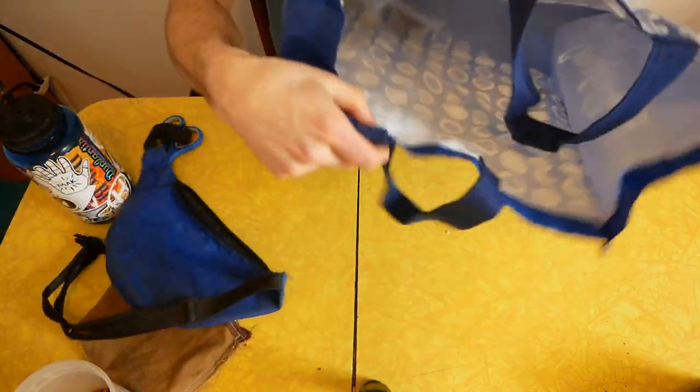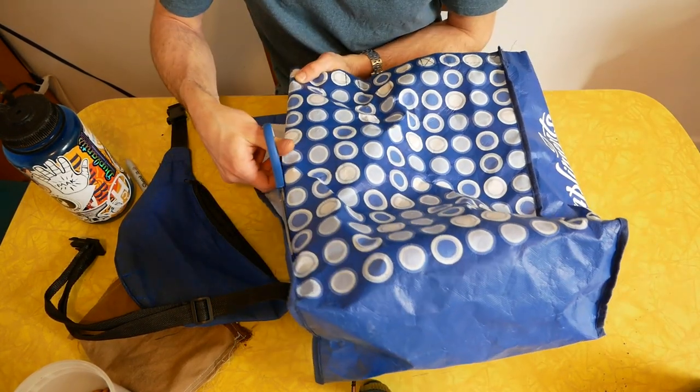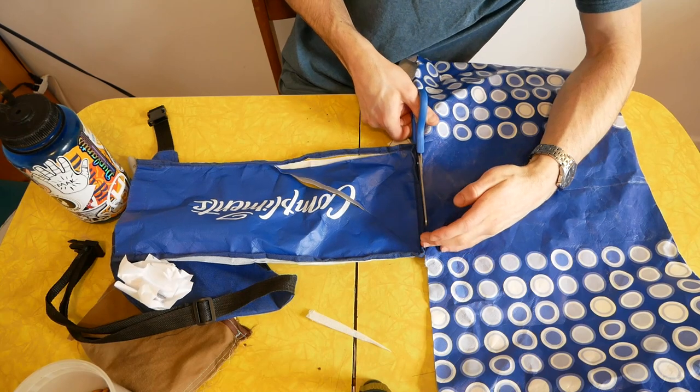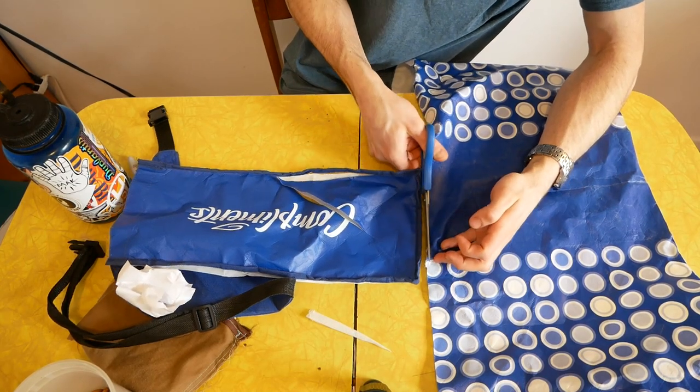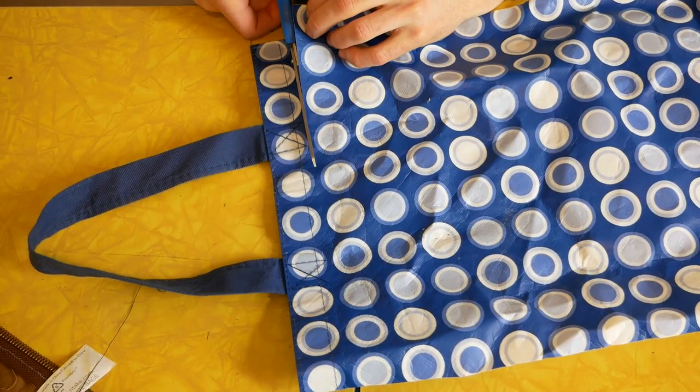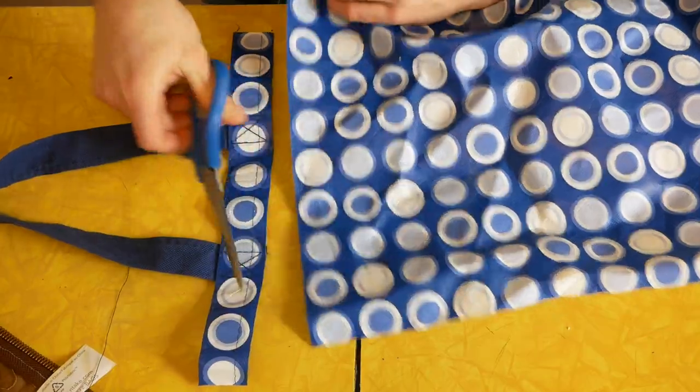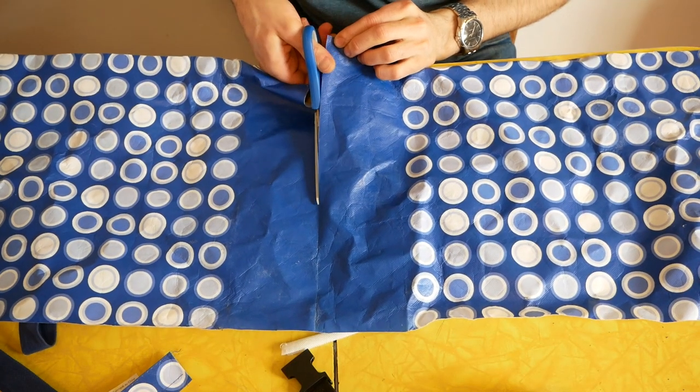These reusable shopping bags are durable and easy to clean, so I thought it would be perfect to upcycle one into a dog treat pouch. They also come in a huge variety of colors and patterns, so you can get creative and make some really funky pouches. This big center panel would give me all the material I would need for the pouch, so I started by cutting it out. I cut off the handles and then cut my long rectangle in half so I ended up with two identical smaller rectangles.